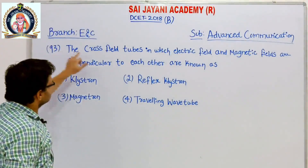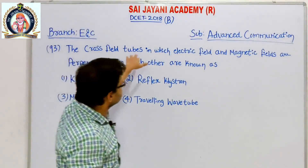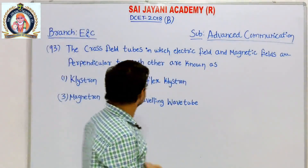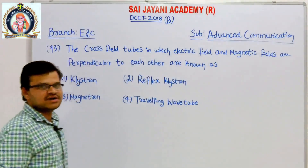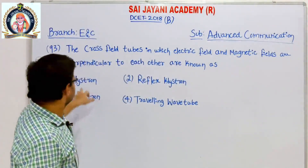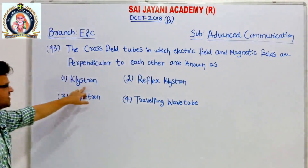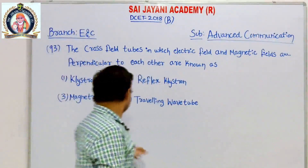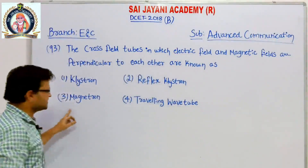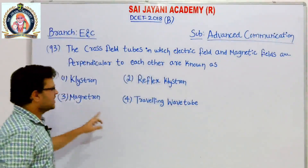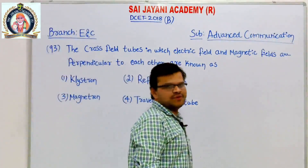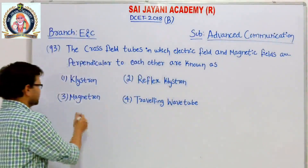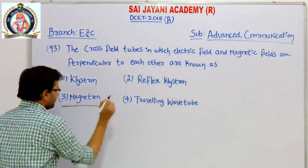Question number 93: Cross-field tubes in which electric field and magnetic fields are perpendicular to each other are known as — options are: Listeron, Reflex Listeron, Magnetron, and Traveling Wave Tube. The answer for this question is Magnetron.